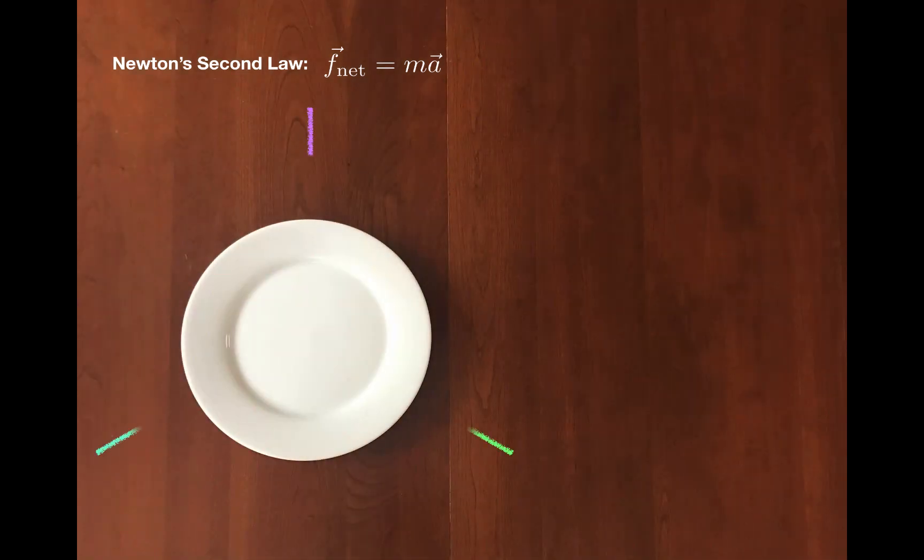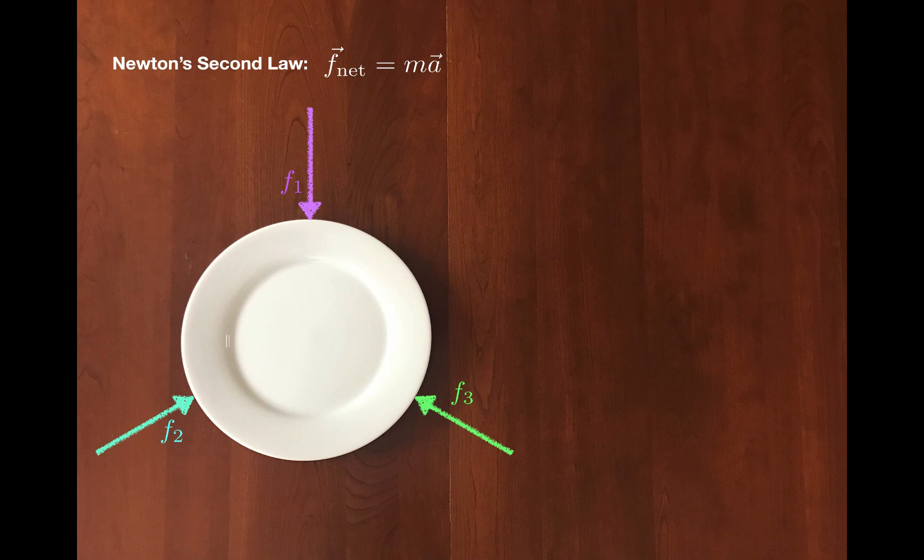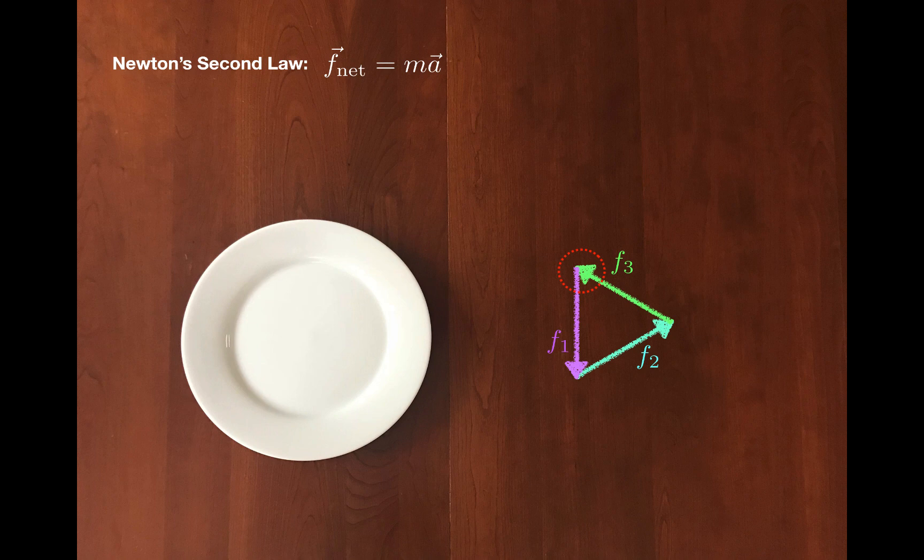Of course, if the forces add to zero, the object will not accelerate, and here's an example with three forces that add to zero. Notice how the tip of the third vector ends up back at the tail of the first. In this case, F net equals zero, so the acceleration is also equal to zero.